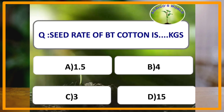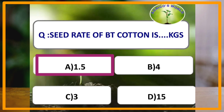The seed rate of BT cotton is how many kg? The seed rate of BT cotton is 1 to 1.5 kg, with a spacing of 90 by 90 cm. The answer is 1.5 kg.